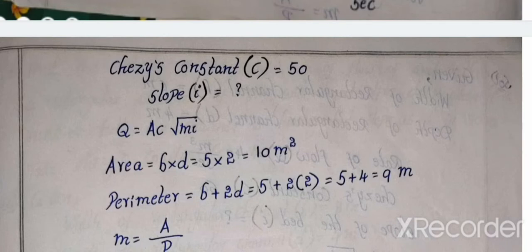Slope, question mark. So I am the slope calculation. Discharge formula, using Chezy's equal to AC root Mi. Here Q is discharge, that is rate of flow. Area of the cross section, here cross section is rectangular, so area B into D. C is Chezy's constant.